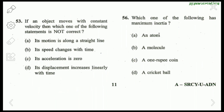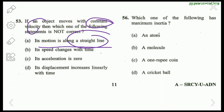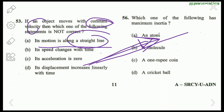Question 56: If an object moves with constant velocity, which statement is not correct? 'Its motion is along a straight line' — correct, because constant velocity means same magnitude and direction. 'Its speed changes with time' — this is wrong; speed will not change. 'Its acceleration is zero' — correct, since velocity doesn't change. 'Its displacement increases linearly with time' — also correct. So the answer is B.